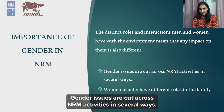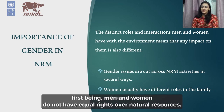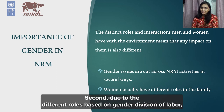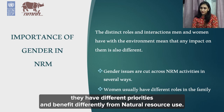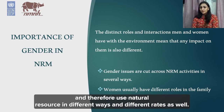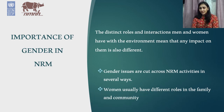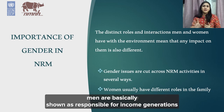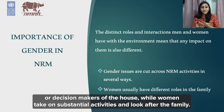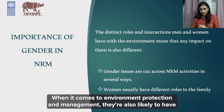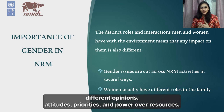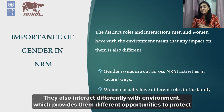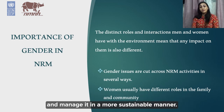Gender issues cut across NRM activities in several ways. First, men and women do not have equal rights over natural resources. Second, due to different roles based on gender division of labor, they have different priorities and benefit differently from natural resource use. Third, men and women have different realities and therefore use natural resources in different ways and at different rates. Women usually have different roles in the environment, families, and community. Men are shown as responsible for income generation or decision-making, while women take on substantial household activities. When it comes to environment protection and management, they are likely to have different opinions, attitudes, priorities, and power over resources, and interact differently with the environment.